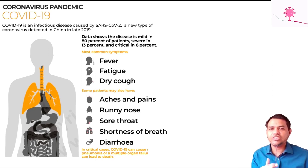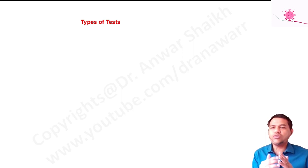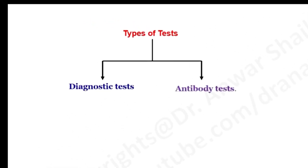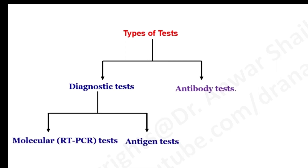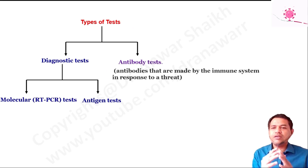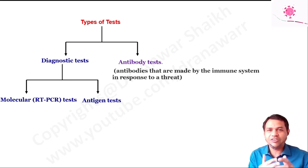Let us see the various diagnostic tests available to determine the presence or absence of COVID-19 infection. A diagnostic test can show if you have an active coronavirus infection and whether you should quarantine or isolate. Currently there are two types of diagnostic tests: the molecular RT-PCR test, which detects genetic material, and the antigen test, which detects specific proteins on the surface of the virus. The antibody test looks for antibodies made by the immune system in response to the coronavirus infection.